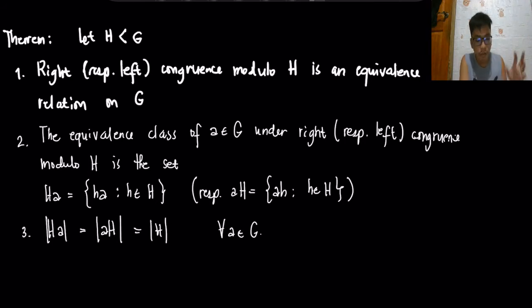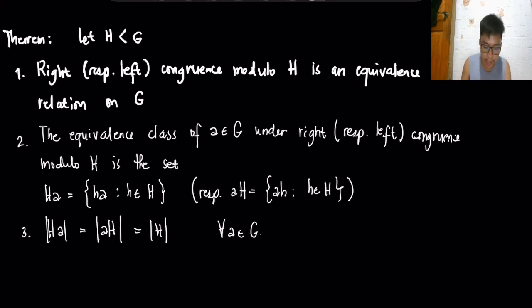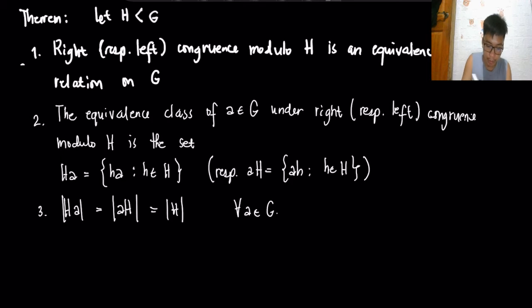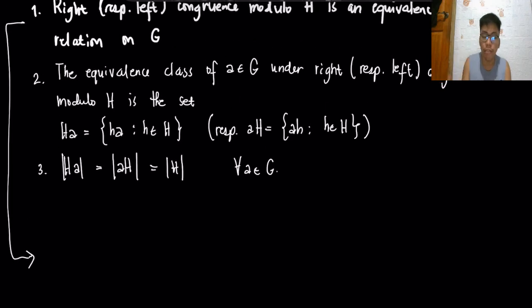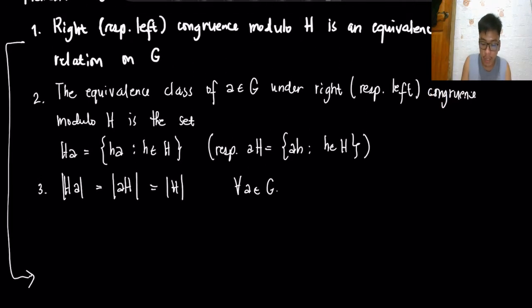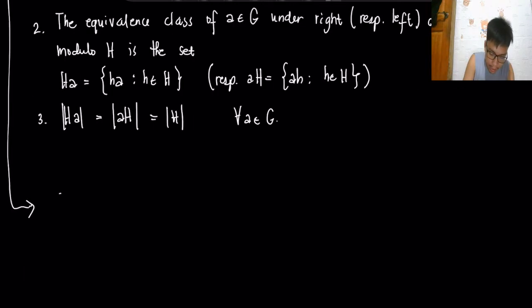Now we will consider an important theorem for congruence modulo in subgroups. Assuming H is a subgroup of G, the first claim states that the right (respectively left) congruence modulo H is an equivalence relation on G. To prove this, we must show the relation is reflexive, symmetric, and transitive.